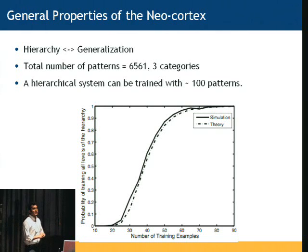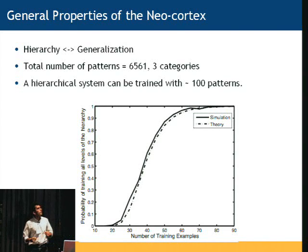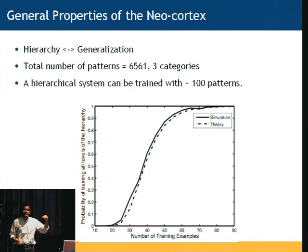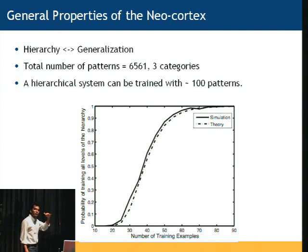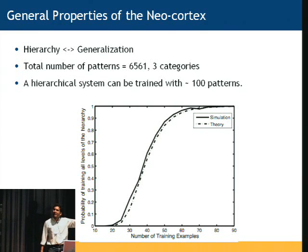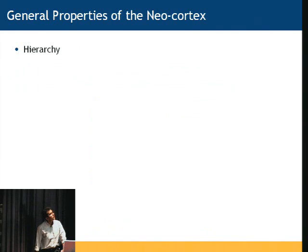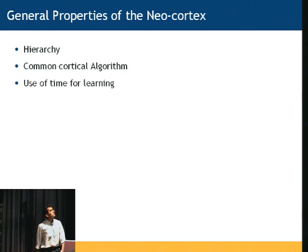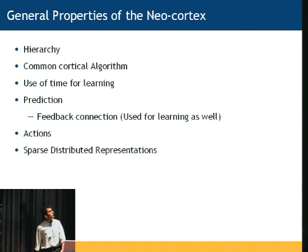Roger talked about generalization, and generalization is a principle you can actually derive from the hierarchy. In one example simulation, if you assume that patterns have hierarchical structure, you can train a system with very few patterns. In this system there were 6,000 patterns in the world, but you could train the system to recognize all those patterns by exposing it to just approximately 100 patterns. So generalization is a principle that you can derive from the hierarchy. By looking at cortex and the world, you can derive many such principles.